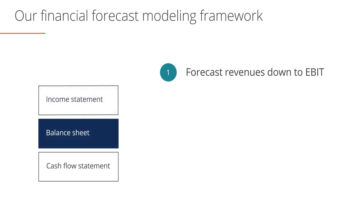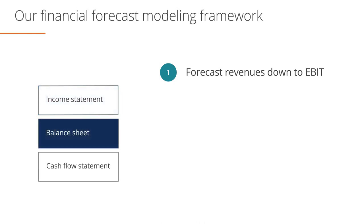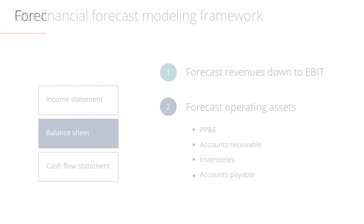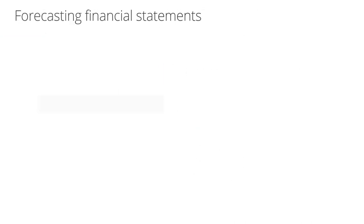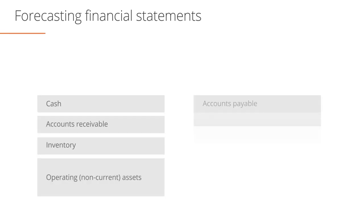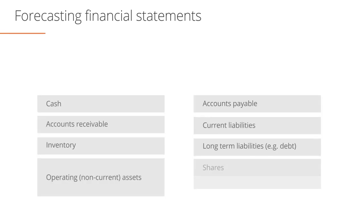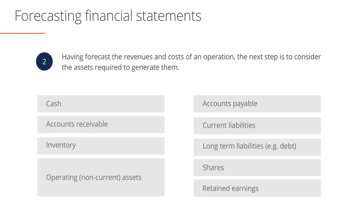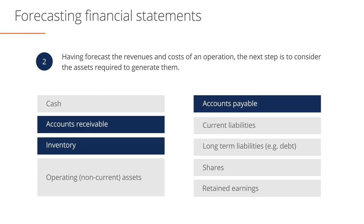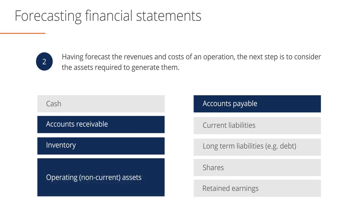Now it's time to move to the balance sheet, where we'll explore how to model operating assets such as property, plant and equipment, accounts receivable, inventories, and accounts payable. At this stage, we are not aiming to forecast the entire balance sheet. Having forecast the revenues and costs of an operation, the next step is to consider forecasting the operating assets required to generate them.